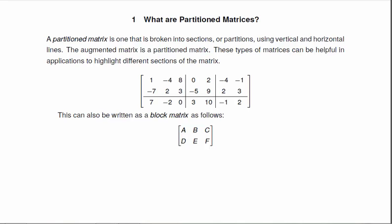So here's a particular example of a partitioned matrix. And we can also write it as a block matrix: A, B, C, D, E, F, where this would be block A, B, C, D, E, and F. And the block matrices are just a little bit easier to work with.